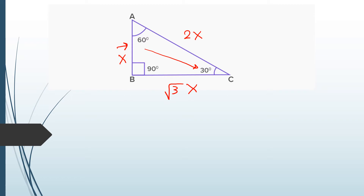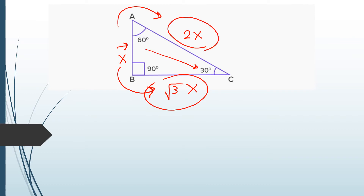So if you know the shortest side, just multiply it by 2 to get the hypotenuse, and multiply it by √3 to get the medium side. If you know the hypotenuse, just divide by 2 to get the shorter side, then multiply by √3 to get the third side. Very easy way to find the unknown sides.